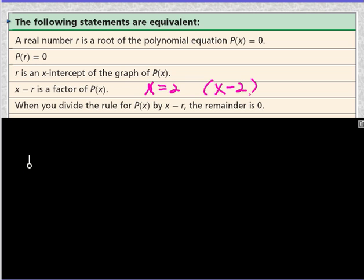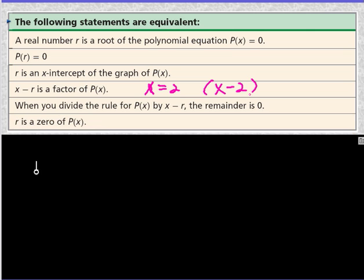When you divide P(x) by x minus r, if it's a factor, the remainder is 0, and r is a zero of P(x). So these all mean the same thing, and you may see questions framed in one of these ways. So if I ask you to find a zero of the polynomial, it's the same thing as asking you to find an x-intercept. So it's just kind of good to know this information.